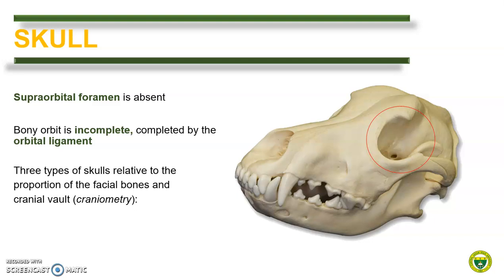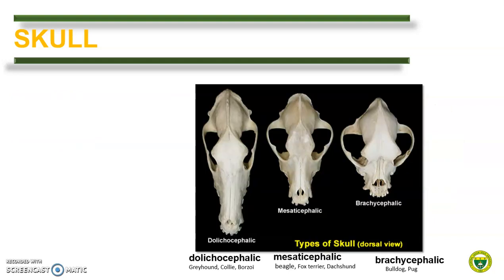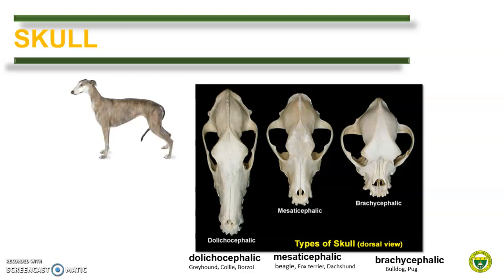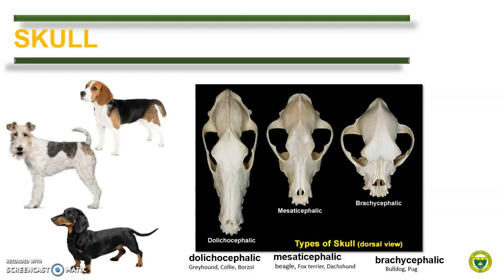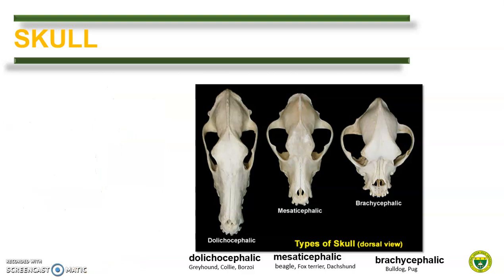The skull of a dog can also be classified based on the proportion of the facial bone and their cranial vault. This process of measuring the points and boundaries in the skull is called craniometry. Based on craniometry, dogs can be classified as dolichocephalic, mesocephalic, or brachycephalic. Dolichocephalic breeds have larger facial compartments and include breeds like greyhound, collie, and borzoi. Mesocephalic has an average conformation and typically includes beagle, fox terrier, and dachshund. Brachycephalic breeds have shorter facial compartments like the bulldog and the pug.